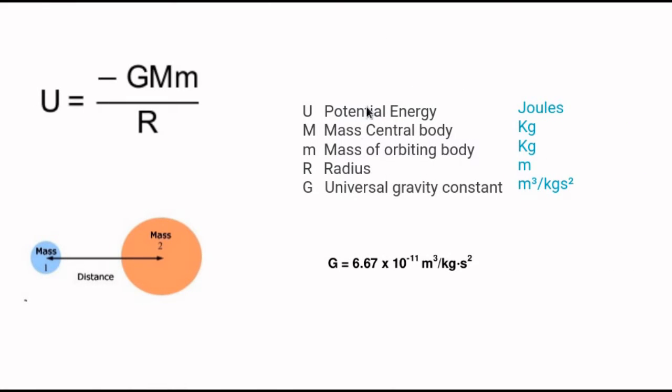This is a quick lecture about calculating the potential energy in an orbiting body. The potential energy formula is U equals negative GMm over R, where U is the potential energy, equal to the product of the universal gravity constant G times the mass of the central body M—in this case the larger object.